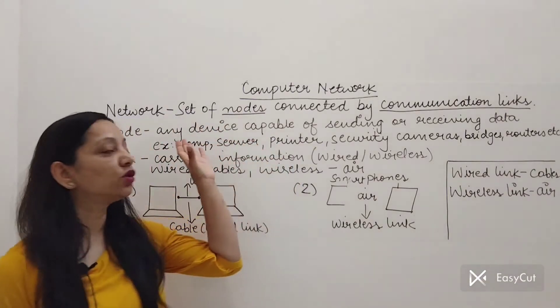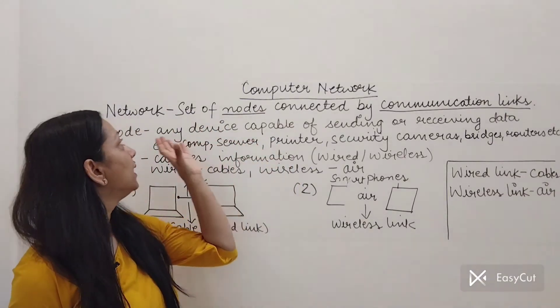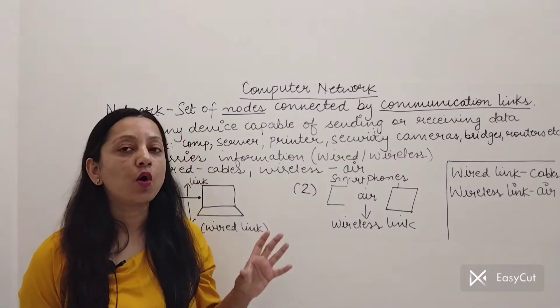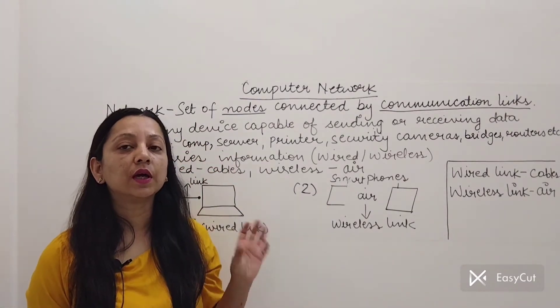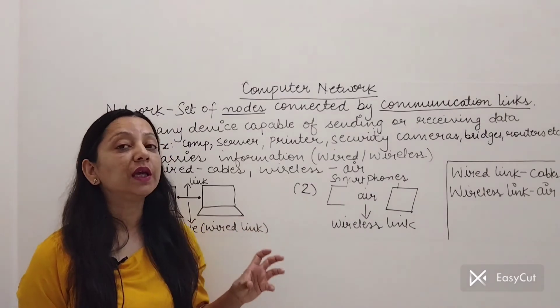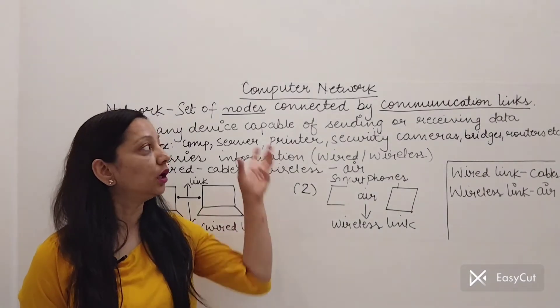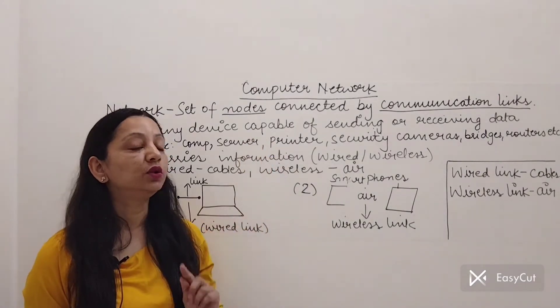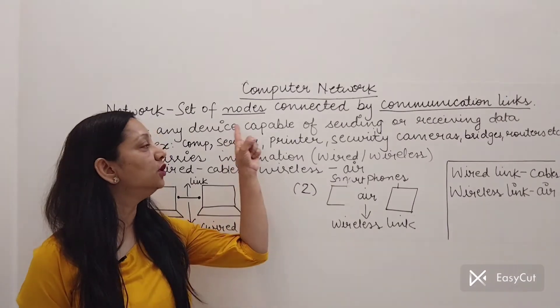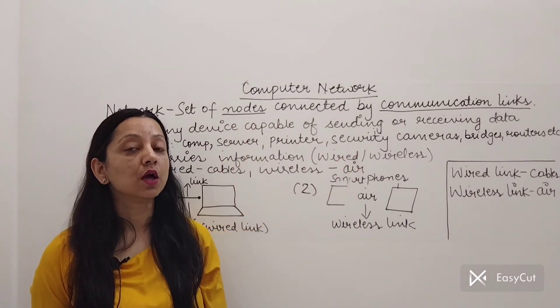Now here the definition of a computer network says that it is a set of nodes connected by communication links. Now you can clearly see I have highlighted two important words. One is the nodes and other is communication links.